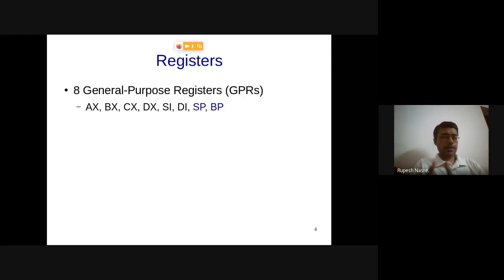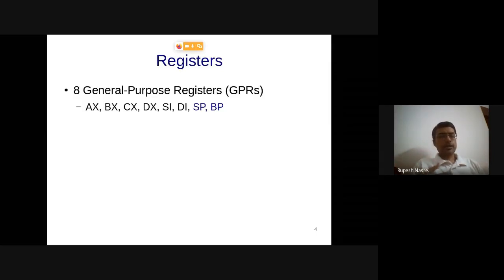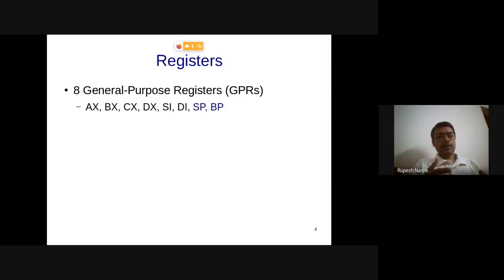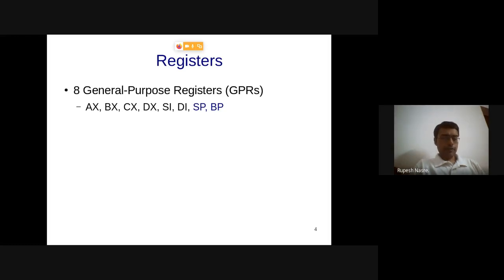Historically, the 16-bit processor had registers, but memory support was up to 1 MB, requiring a 20-bit address (2^20 = 1 MB). Intel solved this by combining two 16-bit registers — for example, SP and DI, or BP and SI — to address all 20 bits. This addressing scheme is somewhat historical now, but it still gets used when booting a computer in protected mode. You may not see these 16-bit names directly in modern code.